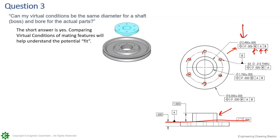The short answer is yes — by comparing virtual conditions of mating features, this will help you understand the potential fit of the assembly. They can be the same, and if they are the same, that's essentially saying we have a zero clearance fit at worst case scenario. At worst case position or perpendicularity, we will still have zero clearance — it'll fit right up to each other. Same with the mating part: if we have error in this bore, the mating part will still work.